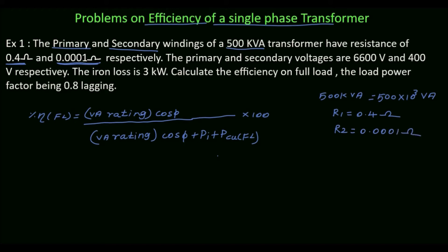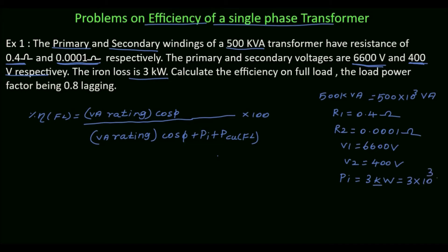The primary and secondary voltages are 6600 volt and 400 volt respectively. So V1 is 6600 volt and V2 is 400 volt. The iron loss Pi is 3 kW, which is 3 × 10³ watt. We need to calculate the efficiency on full load.